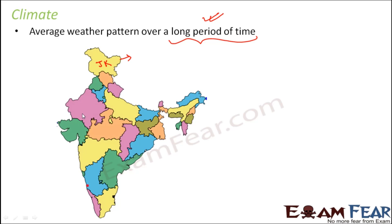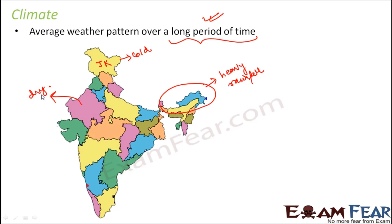Similarly, Rajasthan generally has a hot and dry climate. The northeast states generally have humid conditions with heavy rainfall. The coastal areas are generally humid. All these statements about climate mean that the weather for these places has been observed for a huge number of years — for example, the weather pattern of Jammu and Kashmir has been noticed every day for maybe 20 or 25 years, and we have observed that the climate in Jammu and Kashmir is cold.